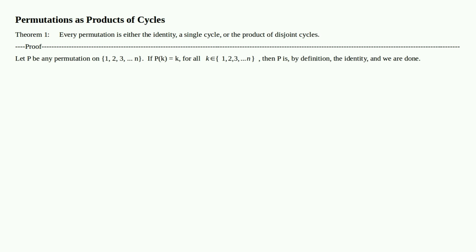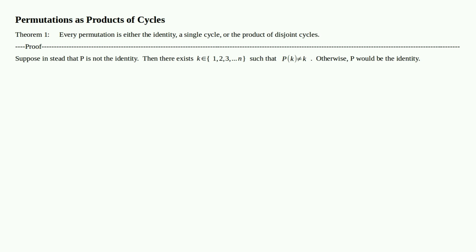Now, if P(k) = k for all k in {1, ..., n}, then P is by definition the identity and we are done. That's the first category. Recall the identity permutation maps every number to itself — plug in 1, get 1; plug in 2, get 2; and so on. That's exactly what we have if P maps k to k for all k.